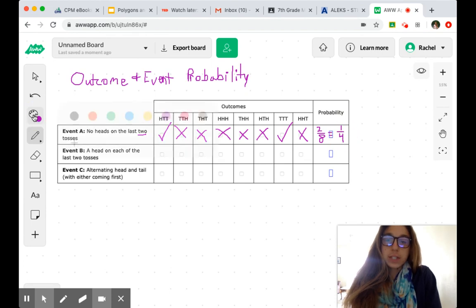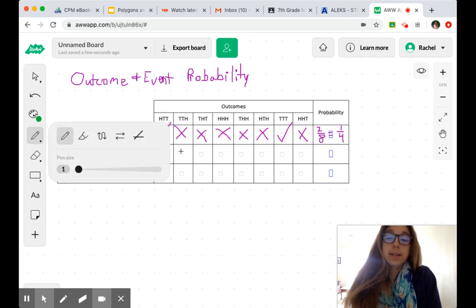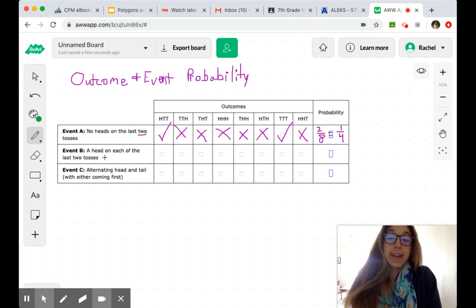All right, I'm going to change the color just for fun. And we repeat that same process down here. So our new event is ahead on each of the last two tosses. So kind of the opposite that we were looking for up here. So now we need it to end HH. Again, we don't care what's happening in that first column.